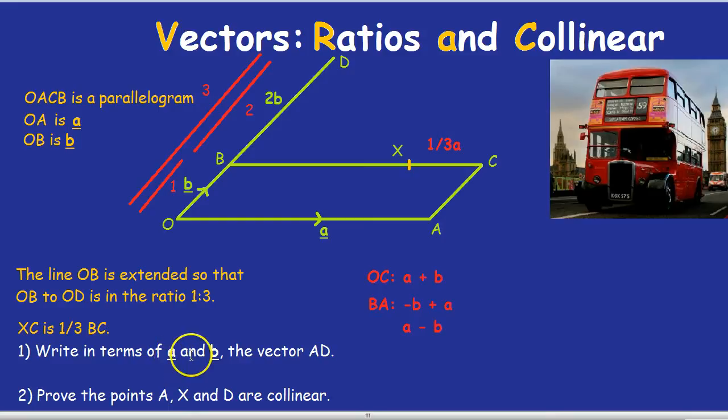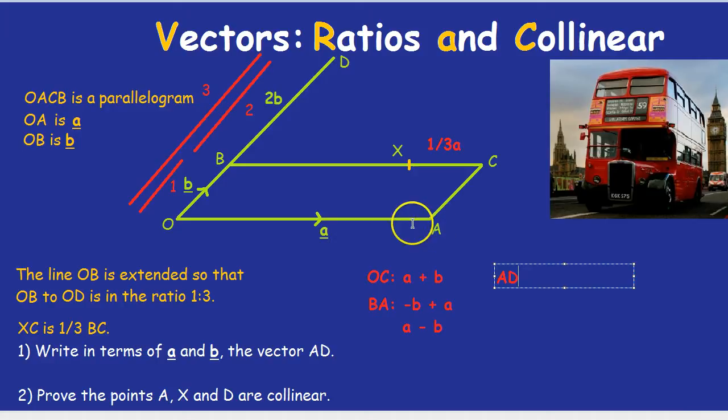Now for the question. Write in terms of a and b, the vector AD. How are we going to get there? Maybe if we take the scenic route, if we go along here to O, and then up. So A to O is against the arrow, so it would be minus a to start with, because we're going opposite to the arrow. And then O to D, because we did that work with the ratios before, we know what it is. O to B is b. B to D is 2b. So all the way from O to D is 3b. There we go. We've done question one.